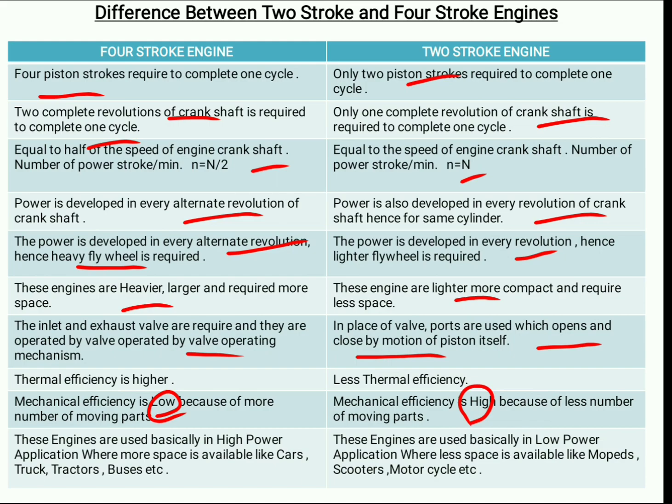4 stroke engines are used in high power applications like cars, trucks, tractors, and buses. 2 stroke engines are used in low power applications where less space is available, like mopeds, scooters, and motorcycles. I hope you understand the difference between 2 stroke and 4 stroke engines. Please like and subscribe to my channel. Thanks for watching.